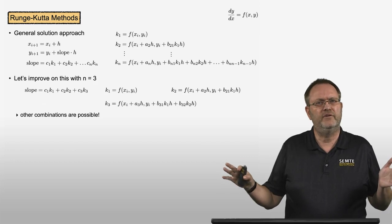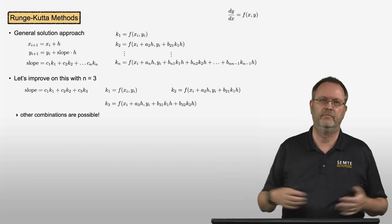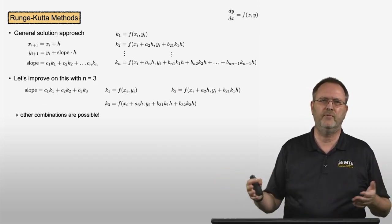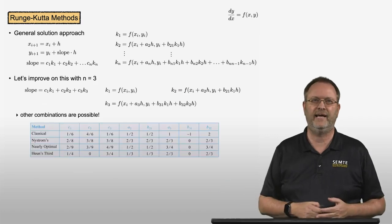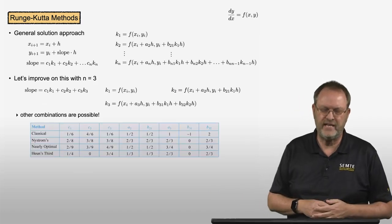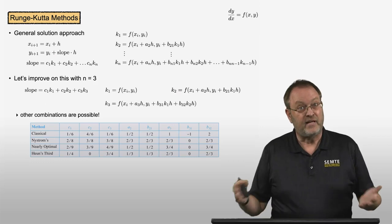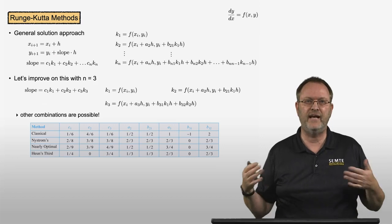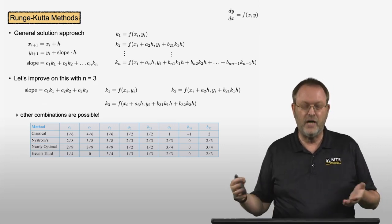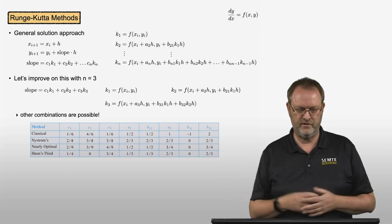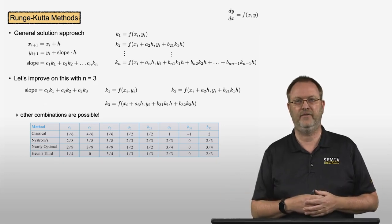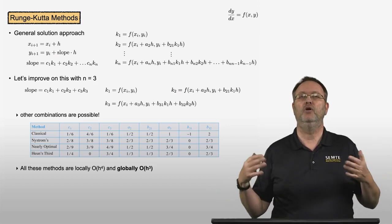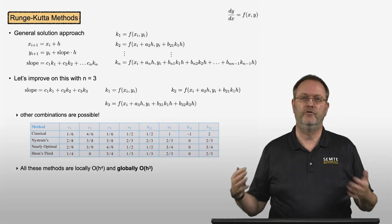There are infinitely many possibilities for RK3 methods — you can choose one of the c_1 values and determine the others to make your own method. Standard examples include the classical RK3, Nystrom's method, the nearly optimal RK3 method, and Heun's third RK3 method. All these methods are locally fourth-order and globally third-order accurate.